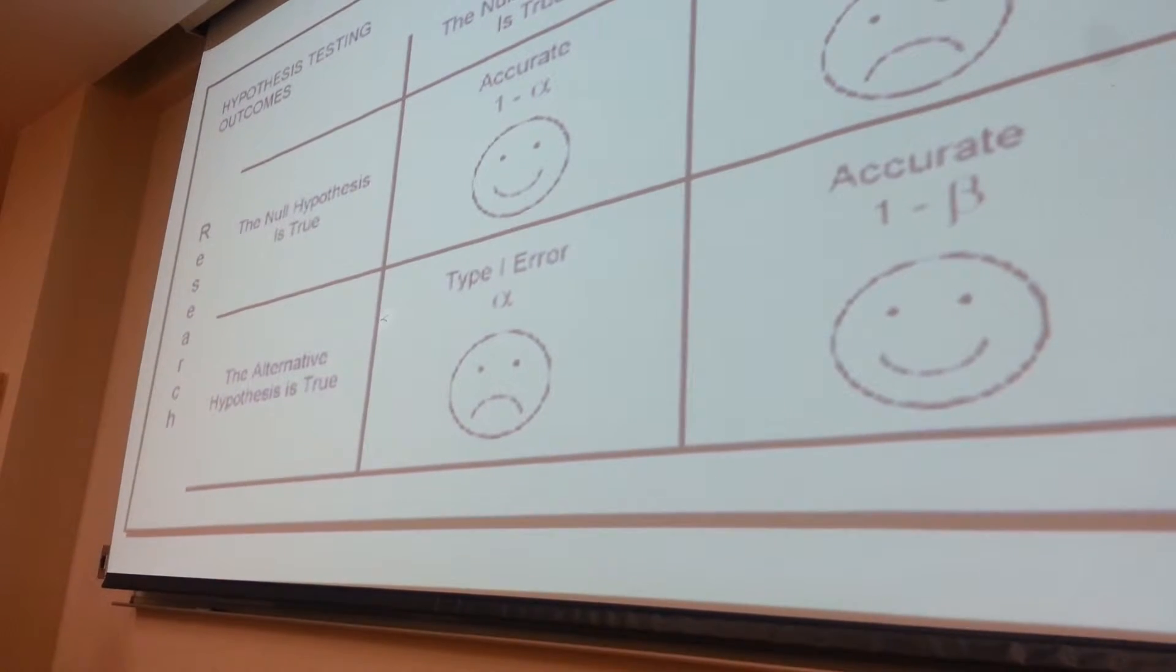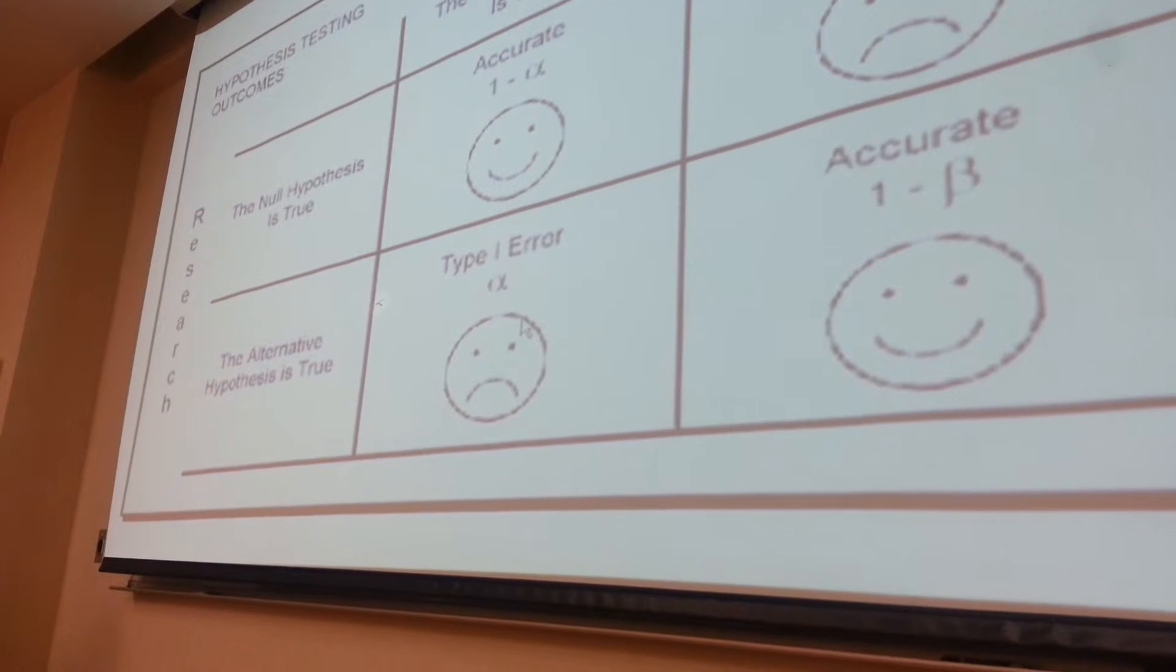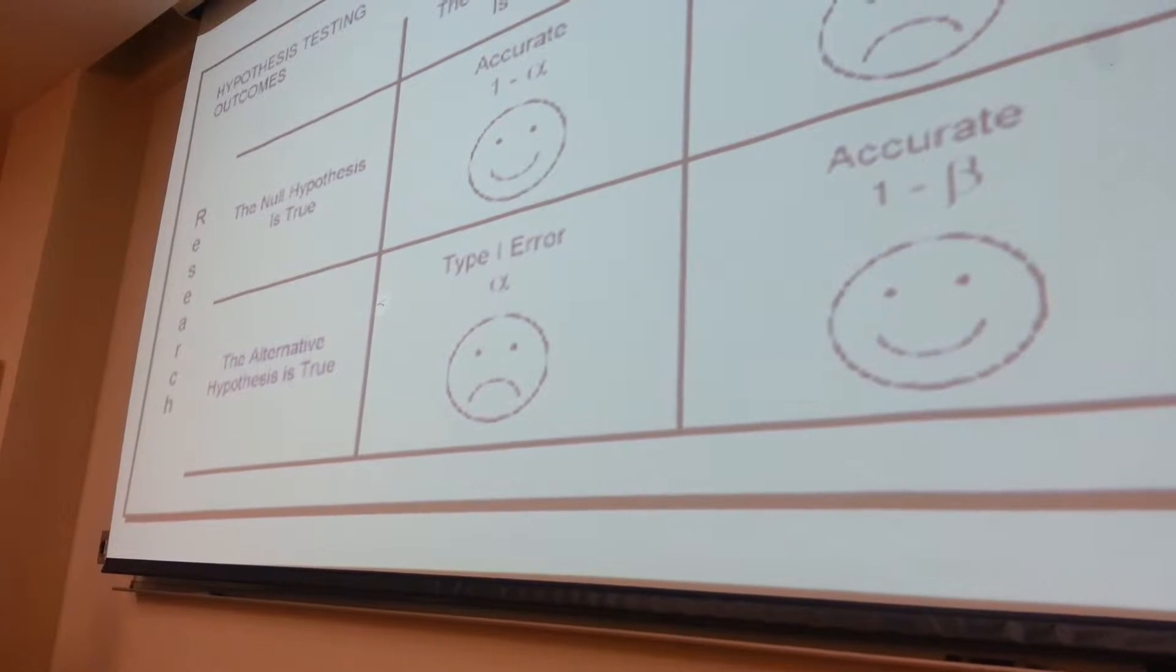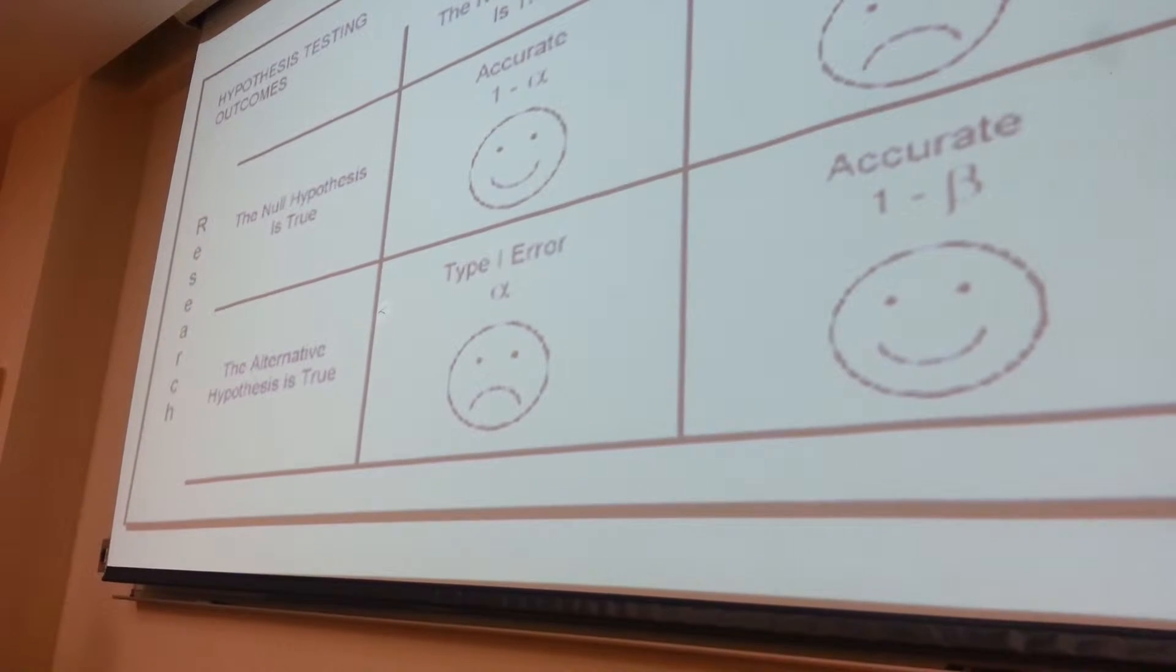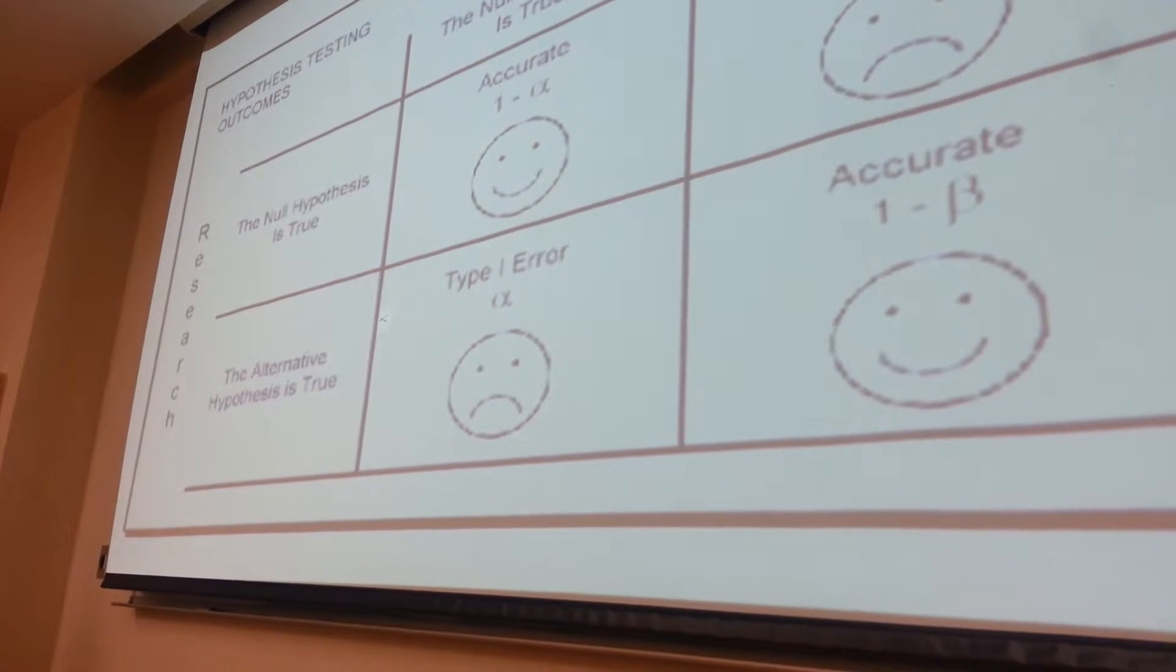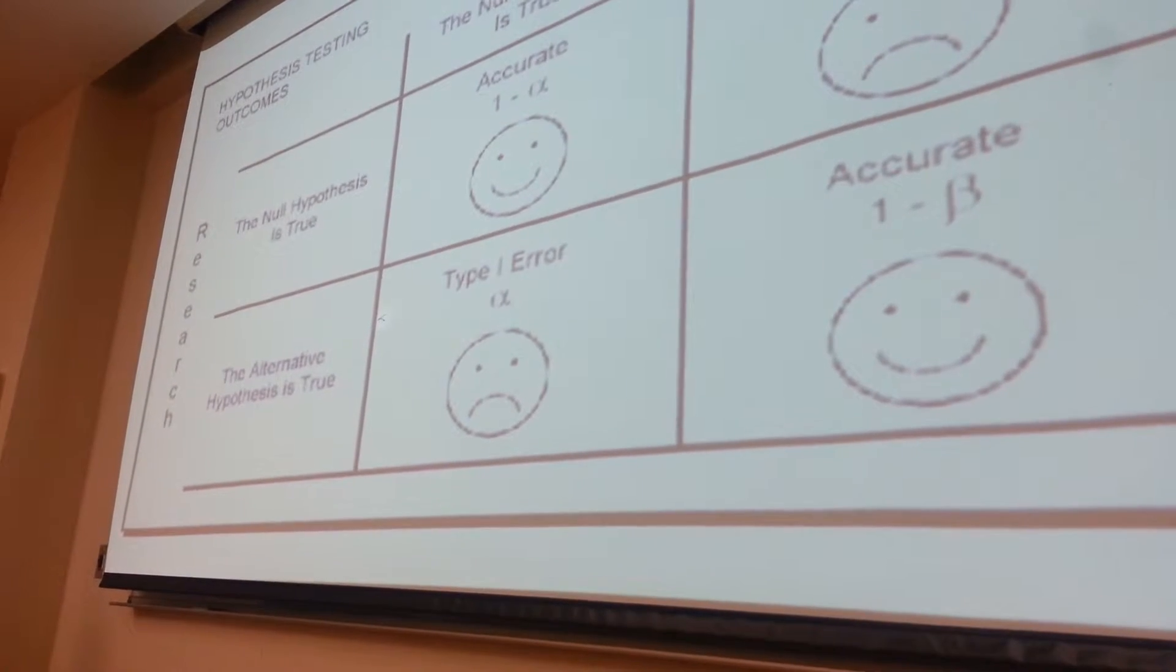So the two errors that we're thinking about are Type 2 and Type 1. You want to know the specifics, not necessarily how to calculate them out, but you want to know what they are and how they're so important when you get to that point that you're making conclusions about your research.